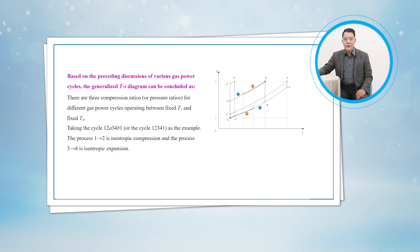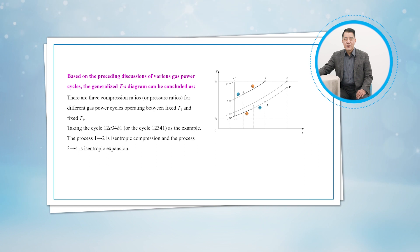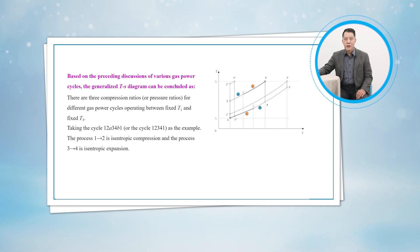The path from state 1 to state 2 is an isentropic compression process, and the path from state 3 to state 4 is an isentropic expansion process.